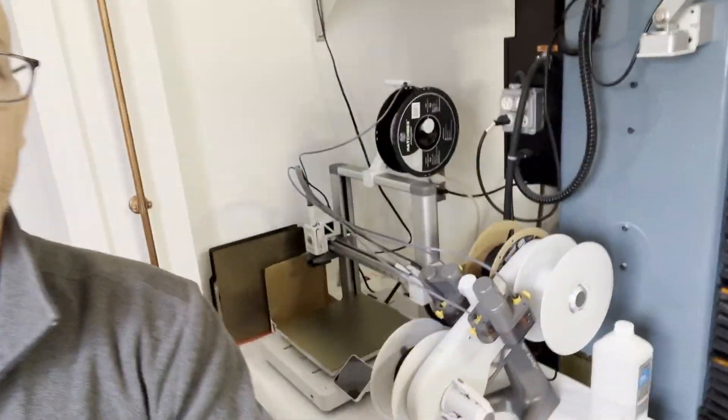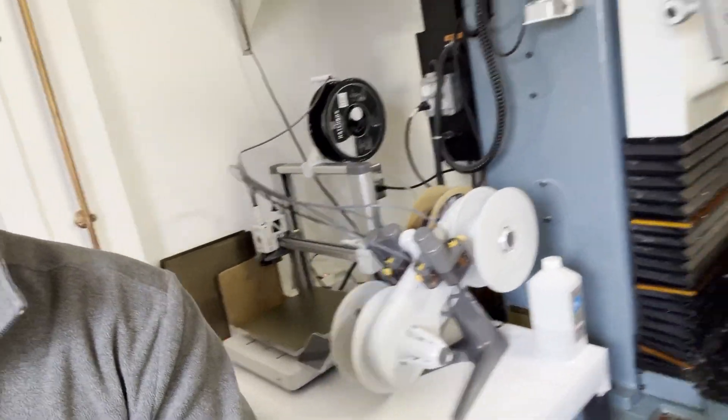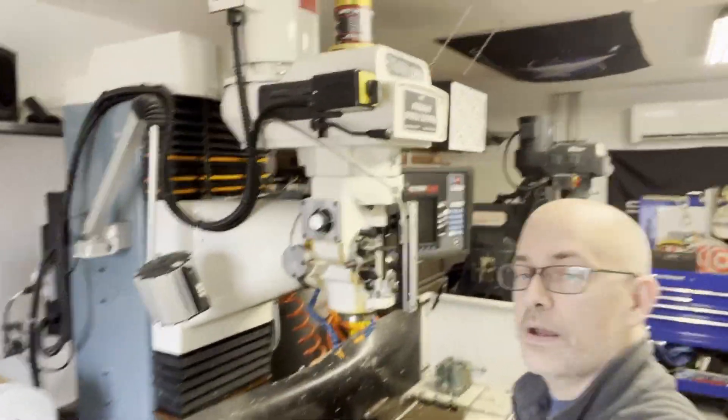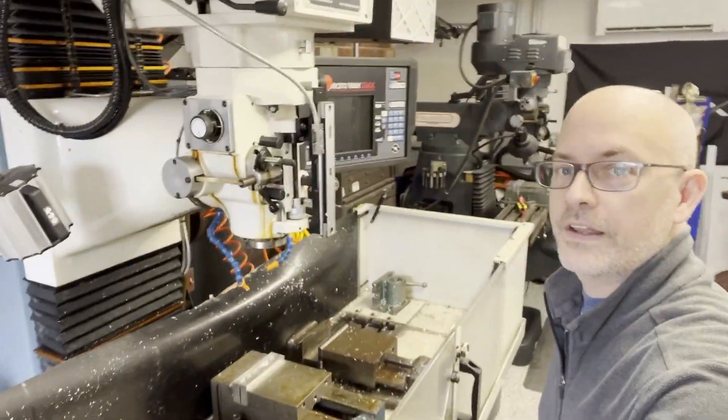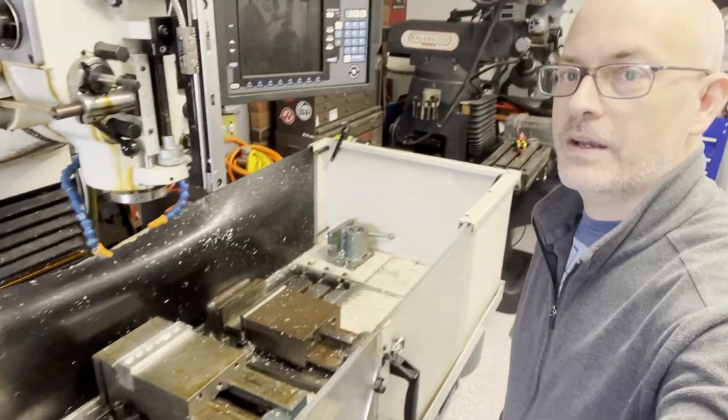Over here is my 3D printing area. Over here is my prototrack mill that I use, a CNC mill to make all my parts.